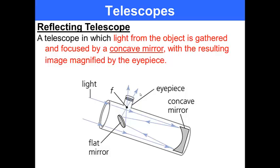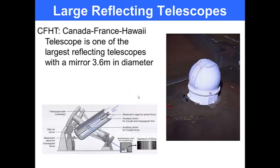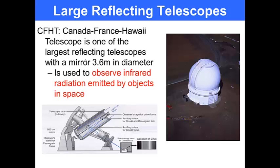A reflecting telescope is a telescope in which the light from an object is gathered and focused by a concave mirror at the back of the telescope and is reflected off a flat mirror into an eyepiece where it is magnified. Large reflecting telescopes are in Canada, France, and Hawaii. The Canada-France-Hawaii telescope is one of the largest reflecting telescopes with a mirror of 3.6 meters in diameter. It is used to observe infrared radiation emitted from objects in space. It works the same way where you have light coming in being focused by this concave mirror reflecting off this flat mirror into a viewing station.